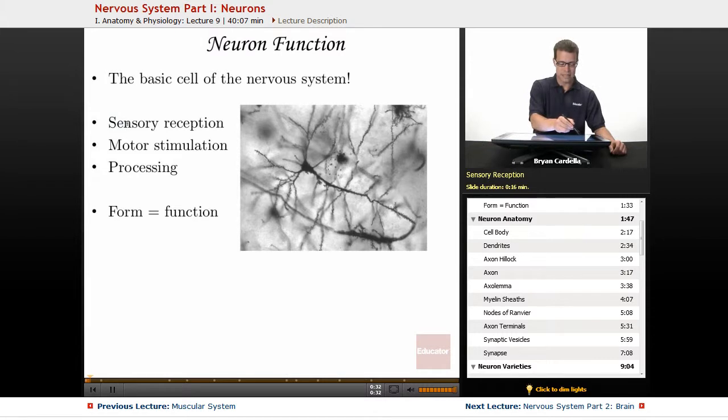The first one is sensory reception. Those are the neurons that are on the receiving end of what your body is experiencing outside of your body, outside of your skin, and what your neurons notice within your body. They can sense that and tell your brain.